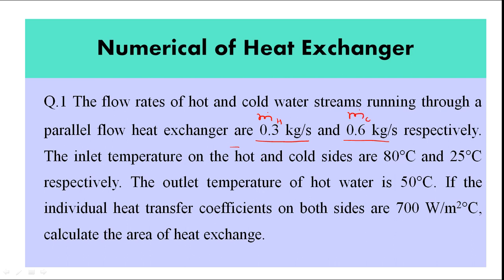The inlet temperatures on the hot and cold sides are T_H1 and T_C1 respectively. The outlet temperature of hot water, T_H2, is also given. The individual heat transfer coefficients on both sides, H_i and H_o, are both given as 700 W/m²°C. We need to calculate the area of the heat exchanger.